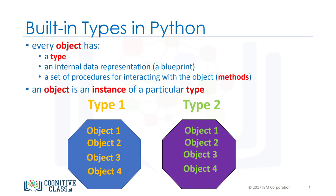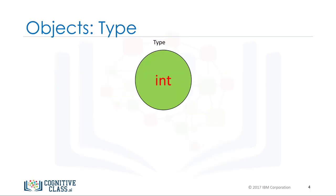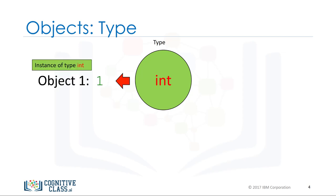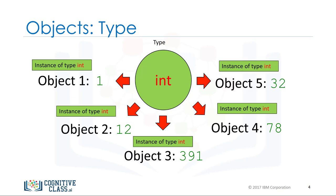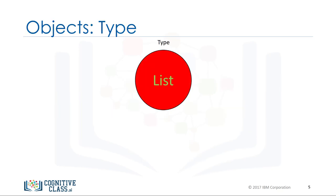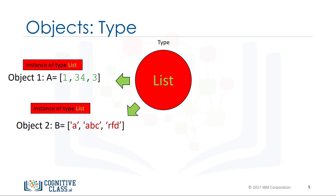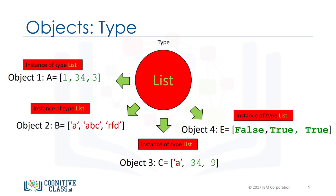Let's do several less abstract examples. Every time we create an integer we are creating an instance of type integer, or we are creating an integer object. In this case we are creating five instances of type integer, or five integer objects. Similarly, every time we create a list we are creating an instance of type list, or five list objects.